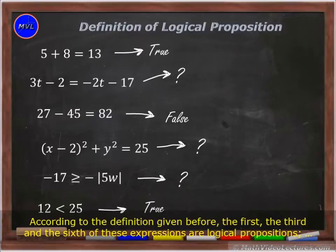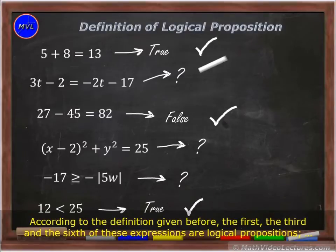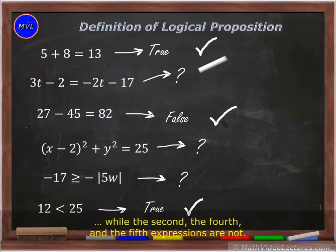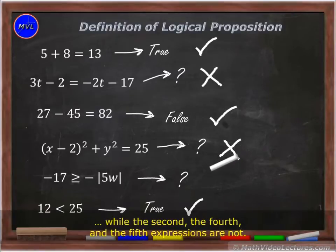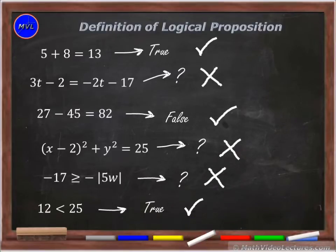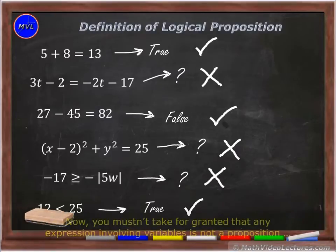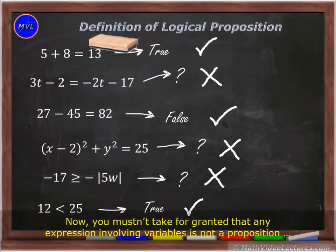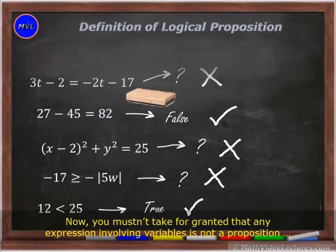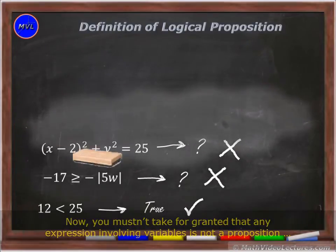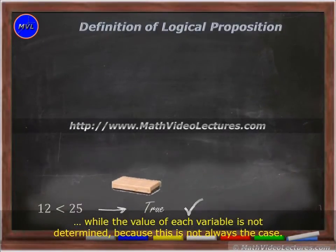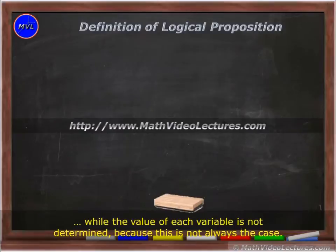According to the definition given before, the first, the third, and the sixth of these expressions are logical propositions, while the second, the fourth, and the fifth expressions are not. Now, you mustn't take for granted that any expression involving variables is not a proposition while the value of each variable is not determined, because this is not always the case.